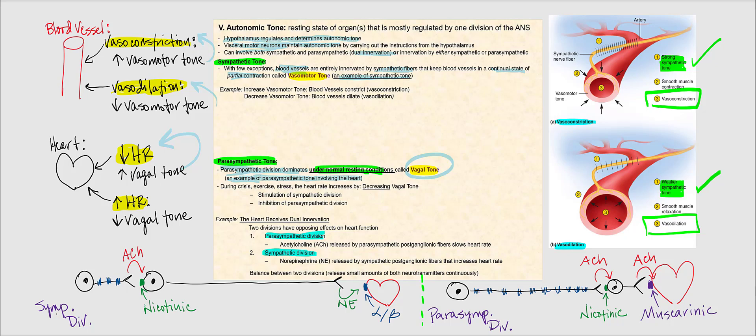If we have a decrease in vagal tone, then we are going to have an increase in heart rate. That happens when we are experiencing crisis, when we're exercising, and during times of stress. During these instances, it is now the sympathetic division — the fight or flight — that predominates, meaning the sympathetic division will take over and our heart rate will go up.